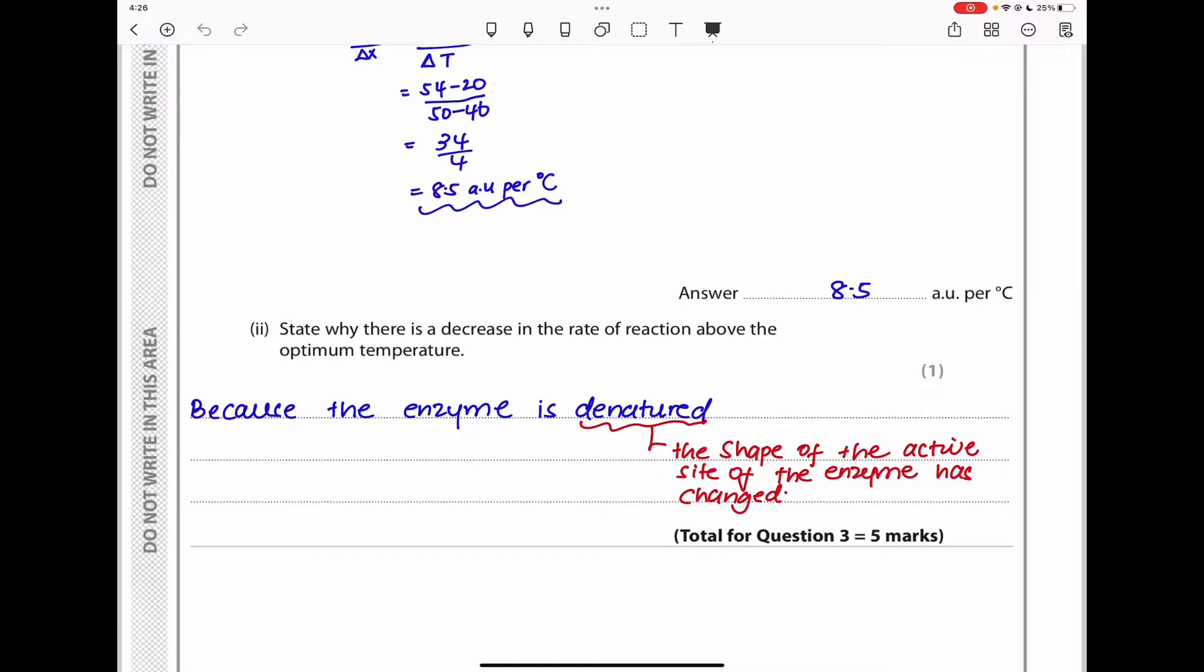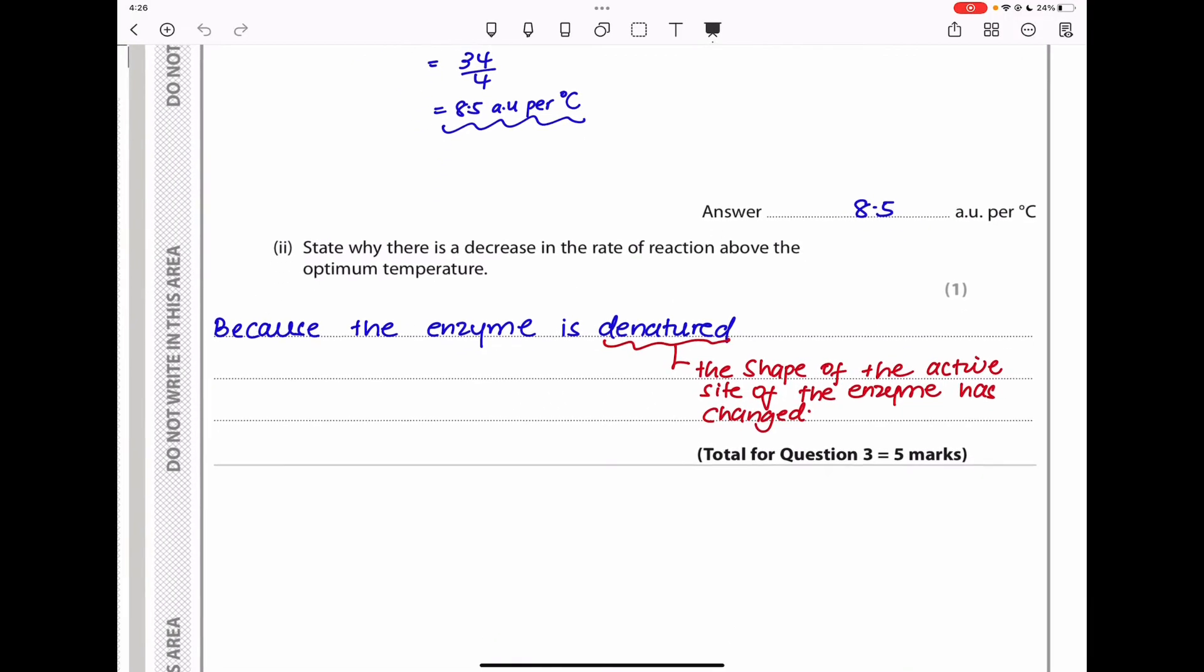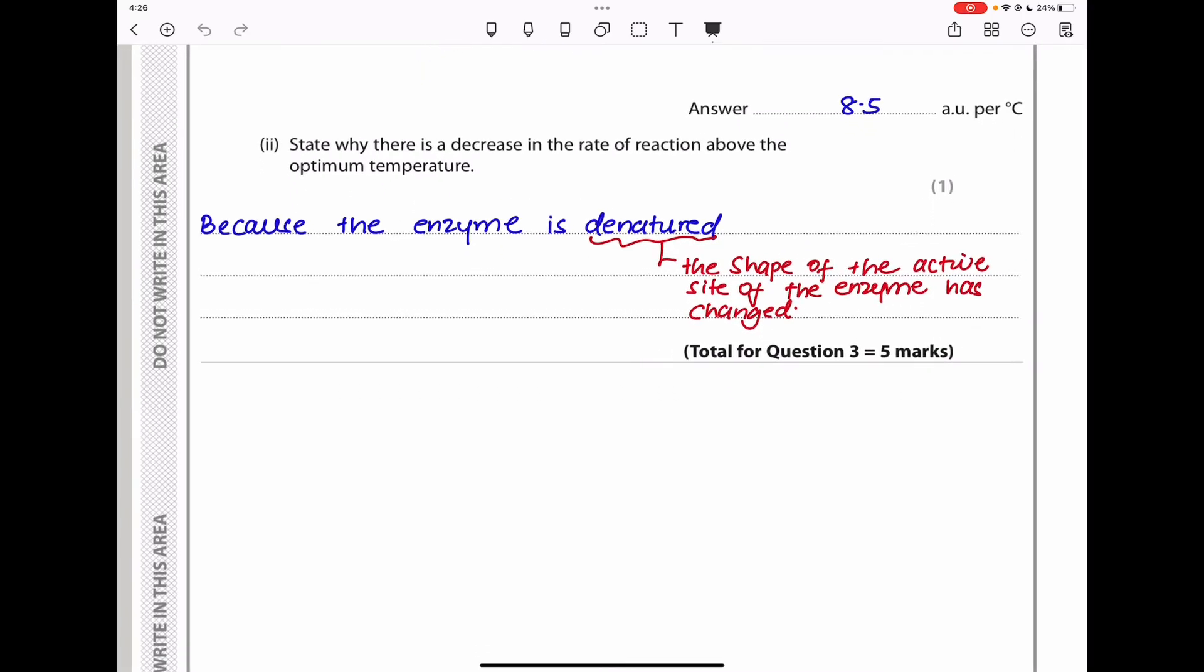State why there is a decrease in the rate of reaction above the optimum temperature. This is an ideal question. Anytime it comes, you have to answer the same way. After the optimum temperature, the active sites of the enzymes begin to be disoriented or the shape is changed. Therefore, the enzymes begin to get denatured, so the substrate can no longer fit into the active sites of the enzyme. Because the enzyme is denatured, denaturation occurs when the shape of the active site of the enzyme is changing. The substrate and enzyme can no longer form a complex appropriately, and therefore the rate of reaction decreases. This brings us to the end of question 3.